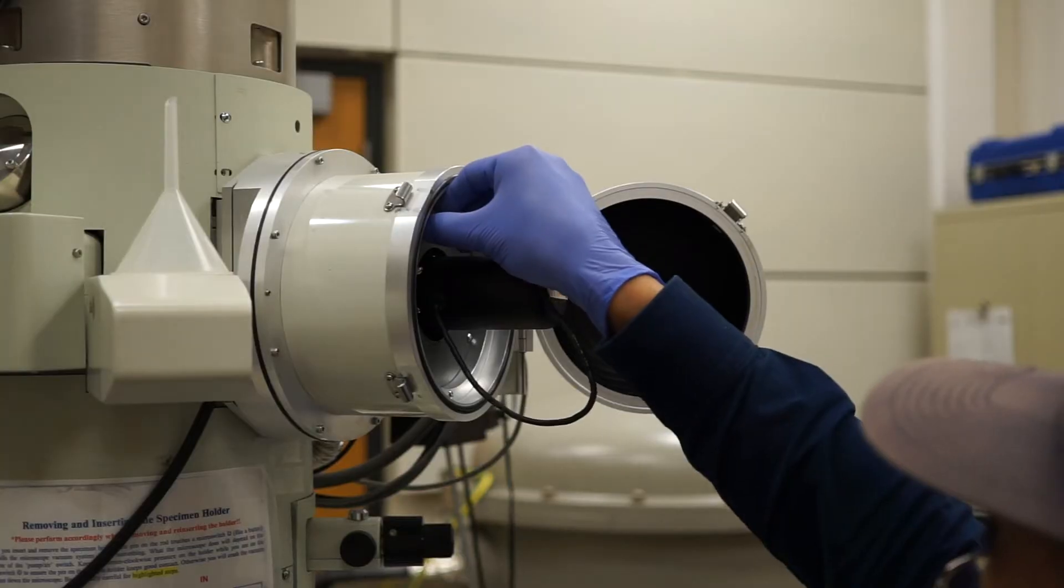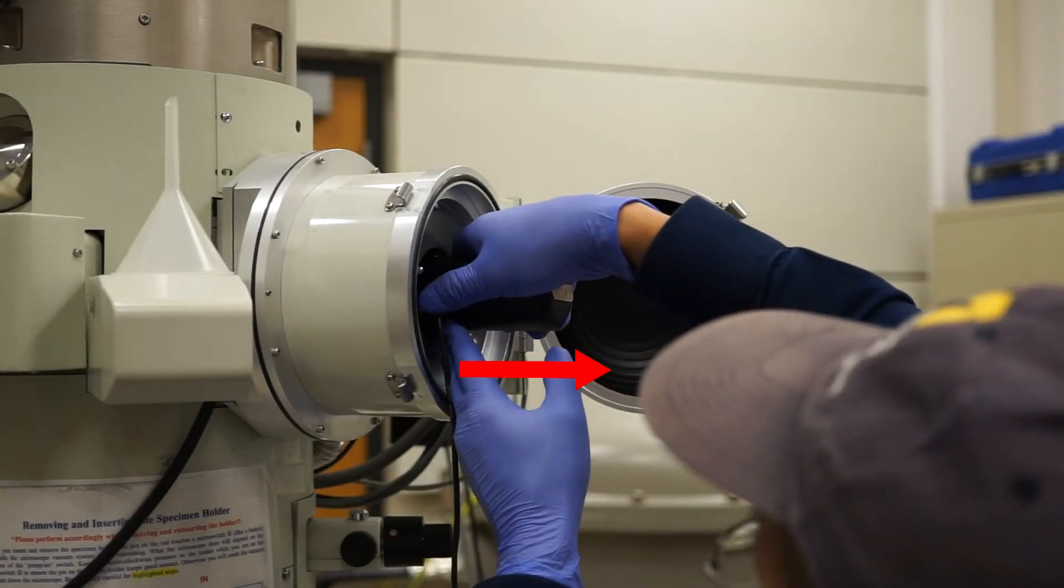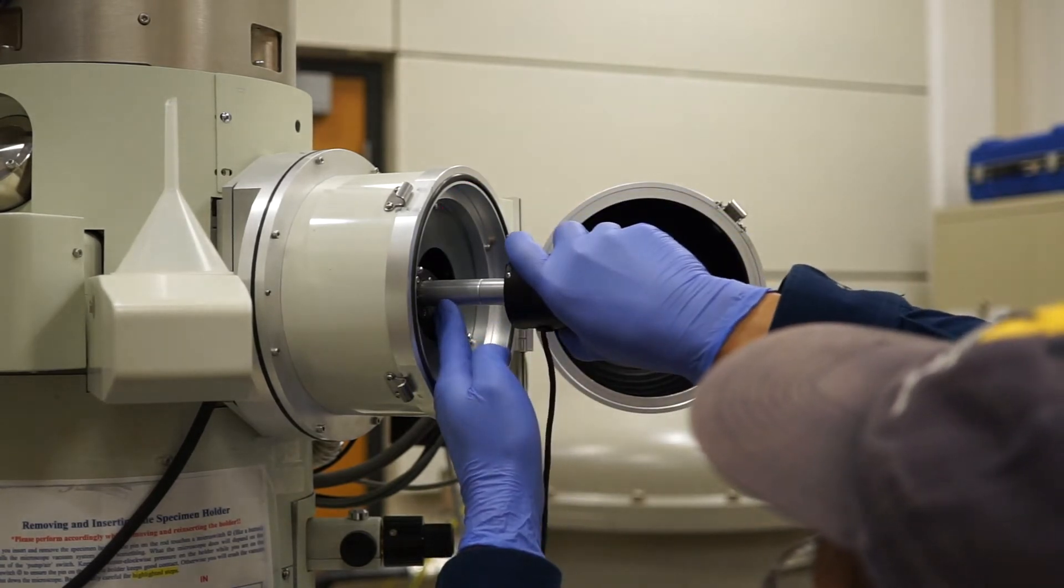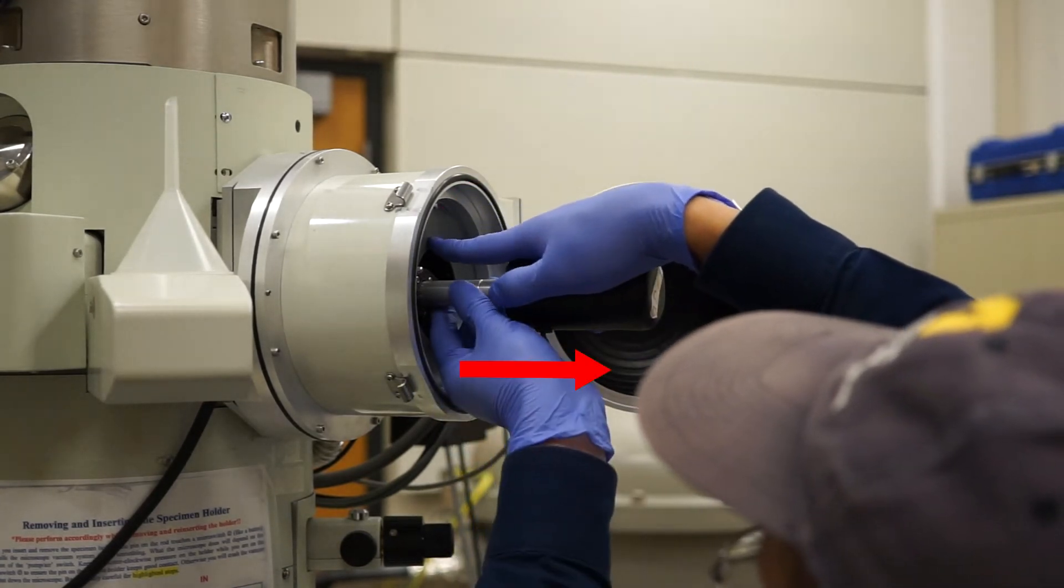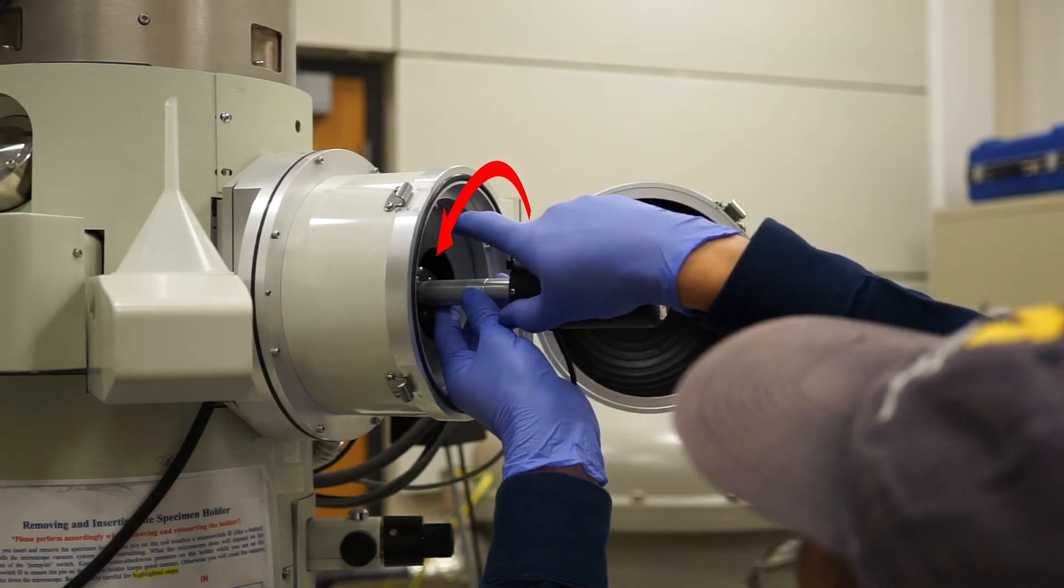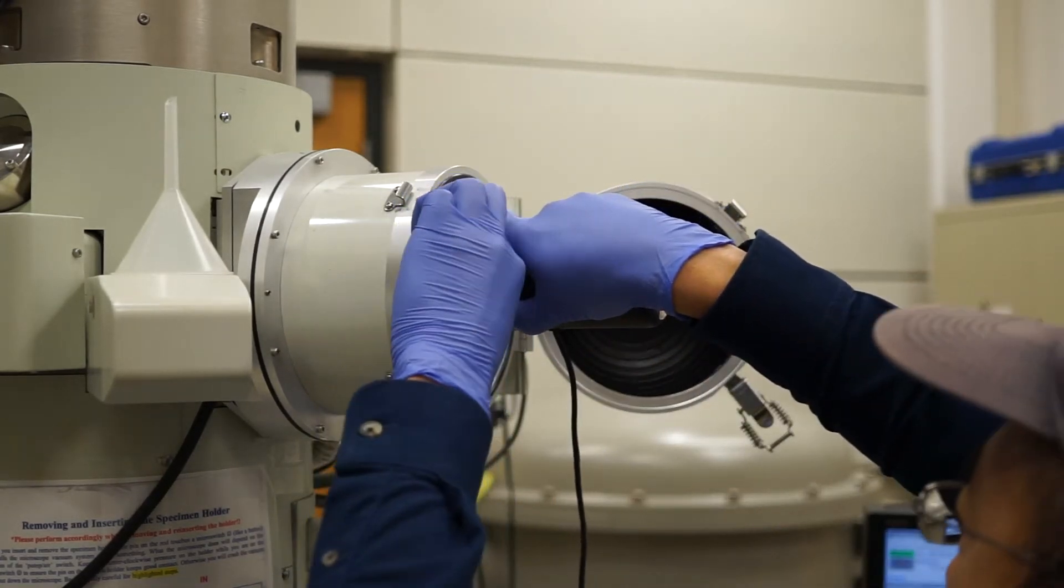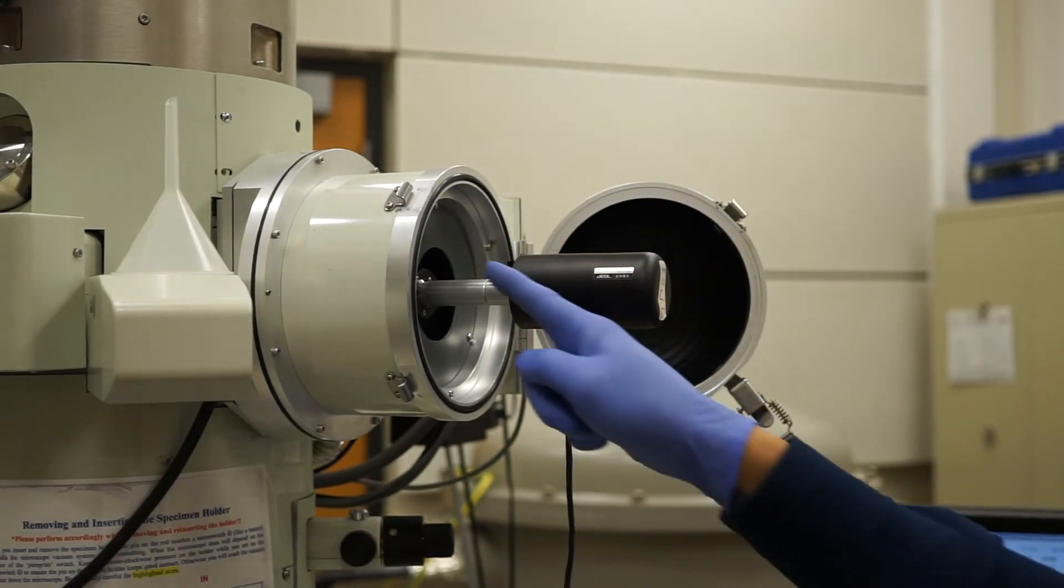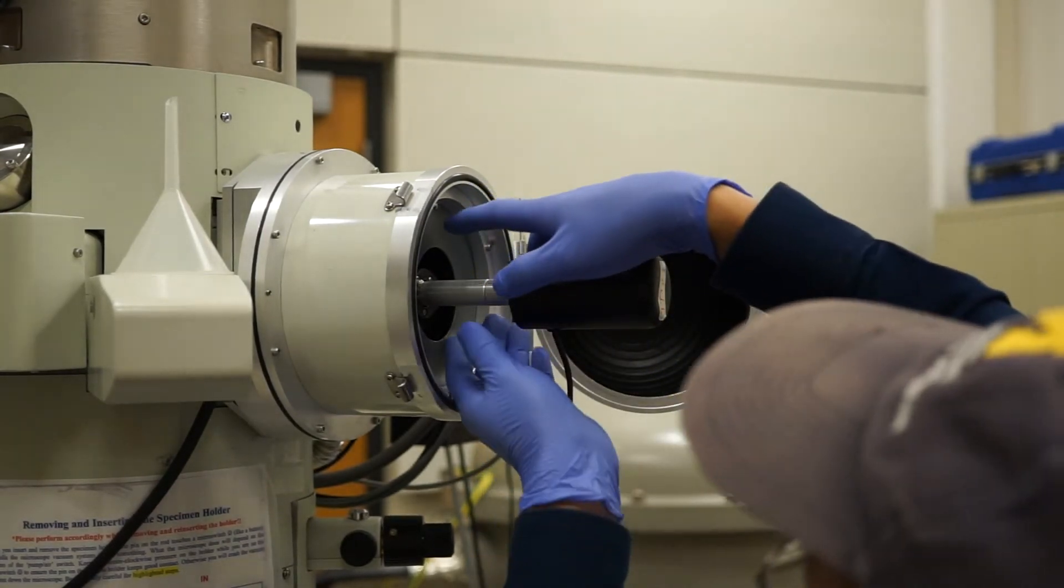To unload the current sample holder, disconnect the cable, pull, rotate counterclockwise until you feel a stop, pull again, rotate counterclockwise until you feel another stop, and flip the switch to the air position. Wait until the green light goes off and pull the sample holder out while keeping it horizontal.